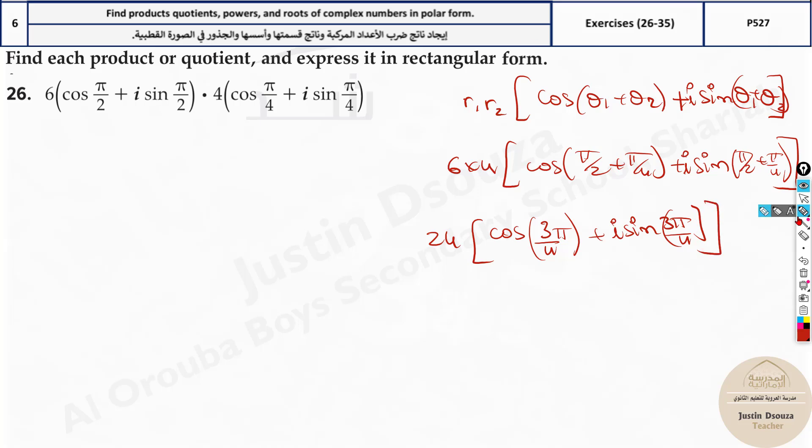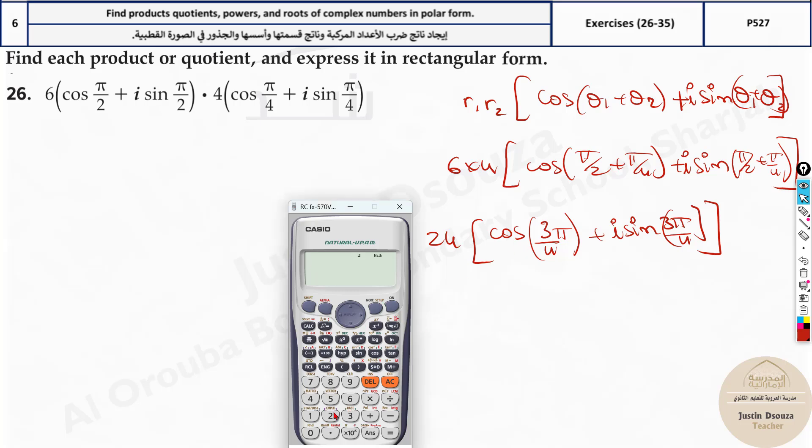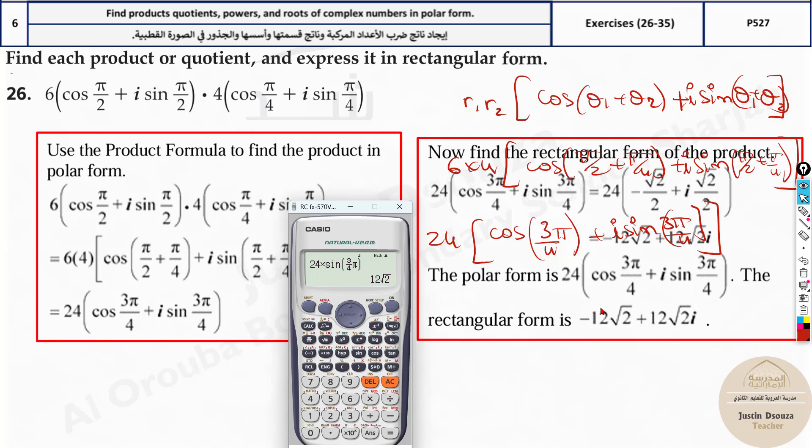But we need the rectangular form. Your answer will not be in this form, it will be in rectangular form. So we need to have a calculator with this. Now what you need to do is type this out: 24 times cos(3π/4). So 3 by 4 π is also the same thing. What is this answer? It's -12√2. Same thing, just change this cos to sine. Just delete this and put sine. You get the answer 12√2 as well. So the answer is -12√2 and positive 12√2, but the positive part has i, because it was the imaginary part. Simple as that.